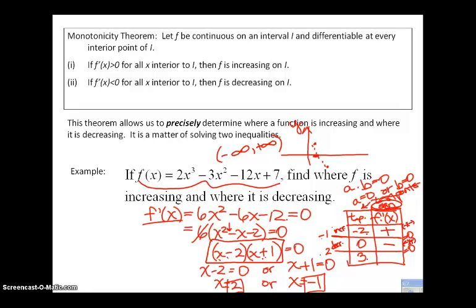Now I'm going to plug in 3. 3 minus 2 is a positive 1. And again, I don't care what the value is, I'm just looking for the sign. And 3 plus 1 is a positive 4. So there, that tells me that over that interval, my function is increasing.